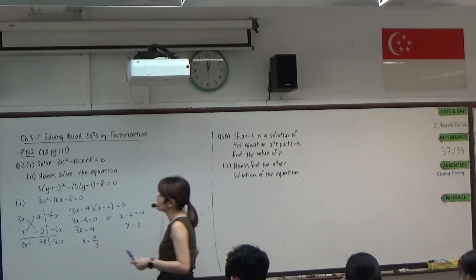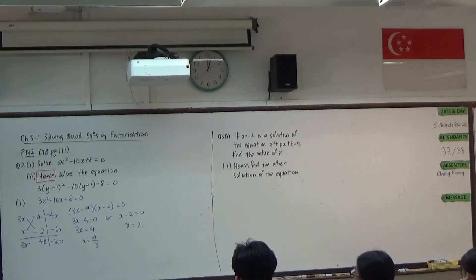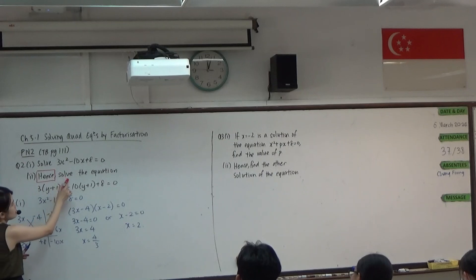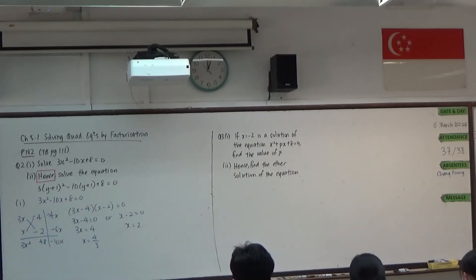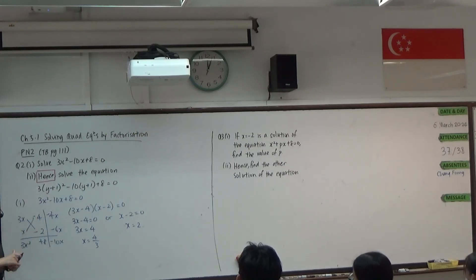Now I want us to focus on part 2. Part 2 says — what do we say about this? We must make use of the answer from the previous part. So we want to use the answer from the previous part to solve this equation: 3(y+1)² minus 10(y+1) plus 8. It may look a little bit more complicated, but actually there is an easy way to get around it, if you are able to observe that this equation here is not so different from this equation here.